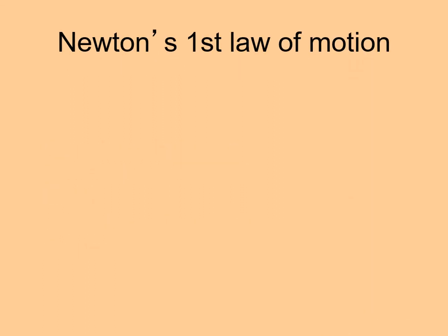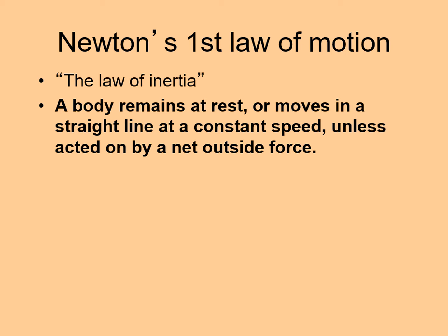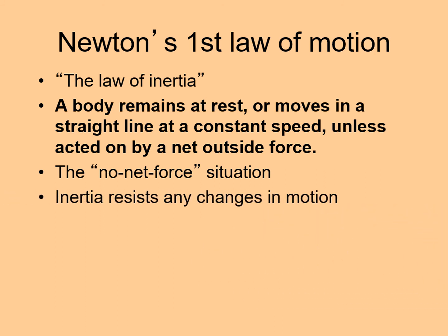Let's look at Newton's first law of motion. This is sometimes called the law of inertia. It says that a body remains at rest or moves in a straight line at a constant speed unless acted on by a net outside force. Okay, let's pull this apart and see if we can figure out what it means. First, notice that this is the no net force situation. We'll look at this more closely in a minute, but keep in mind that it says that all of the forces are balanced. Also, the first law says that the motion isn't changing. If something is at rest, it stays that way. If it's moving along at a constant velocity, it stays that way. In other words, there is a resistance to change. We call this resistance inertia.